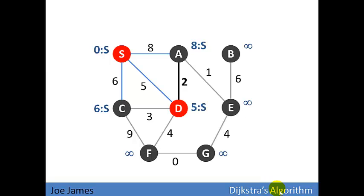Edge AD has a weight of 2. If we add that to D's current distance from the source of 5, we see that we have just found a shorter path to A than the 8 that we had. We can get there in 7. S to D is 5, and D to A is 2, so we can reach A with a distance of 7 by passing through vertex D.